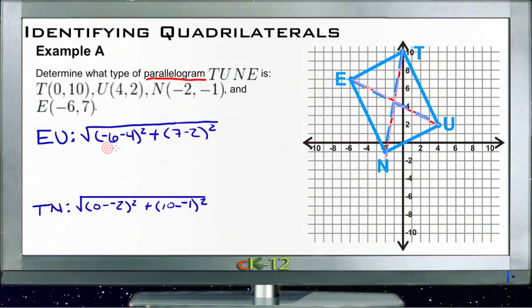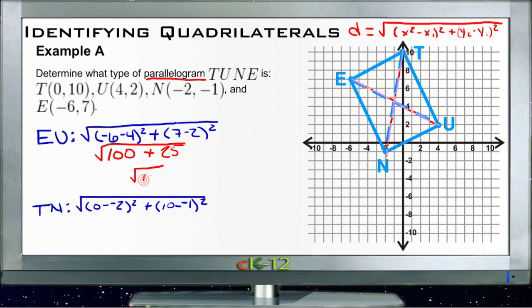I went ahead and wrote in the distance formula here. Recall the distance formula is the square root of x2 minus x1 squared plus y2 minus y1 squared, based on the Pythagorean theorem. So I went ahead and wrote those numbers in. We have negative 6 minus 4, that's negative 10. And negative 10 squared would be 100. So we have 100 plus 7 minus 2, which is 5, squared is 25. So we need the square root of 100 plus 25, or the square root of 125.